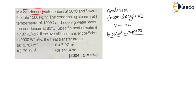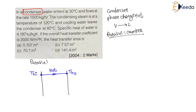Let us assume parallel flow. In case of parallel flow, the entry of hot and cold fluid will be from the same side. Here, as it is a condenser, there will be a phase change of hot fluid. Let us say the entry temperature of hot fluid is T_HI, and since temperature does not change during phase change, the exit temperature is T_HO, and T_HI equals T_HO. The inlet temperature of cold fluid is T_CI and the exit temperature is T_CO — cold fluid temperature increases. Such an arrangement is called a condenser.